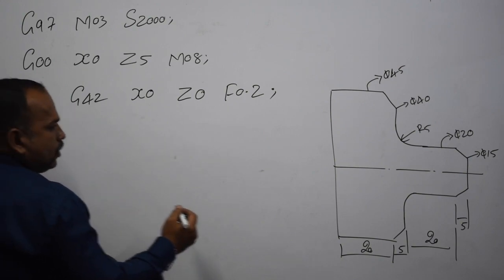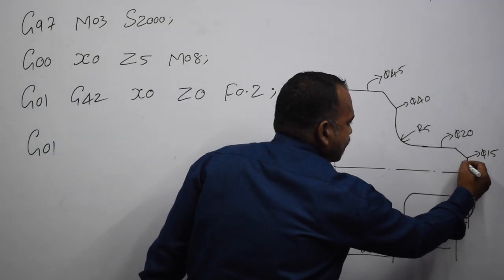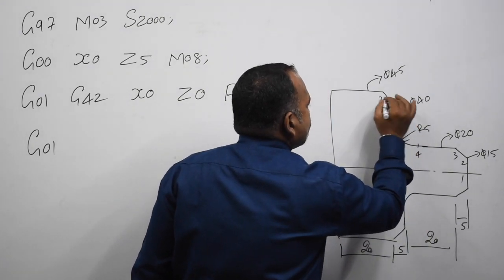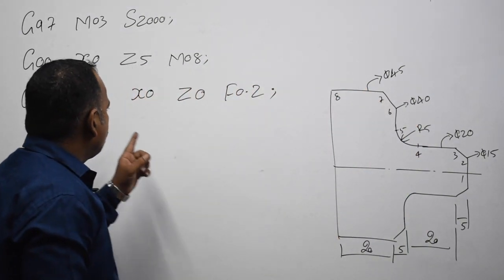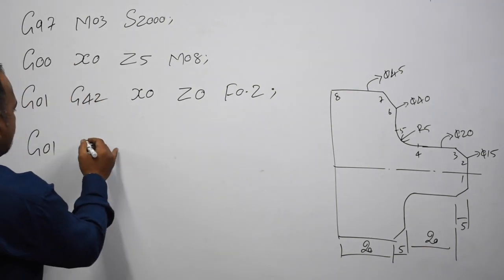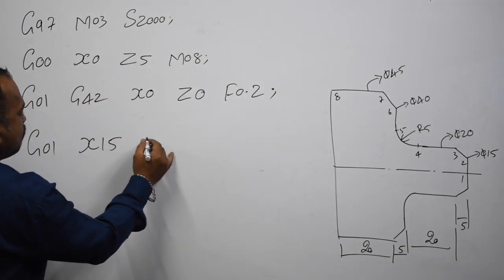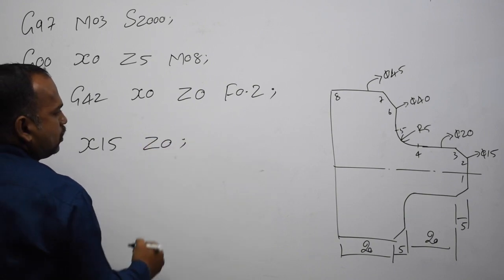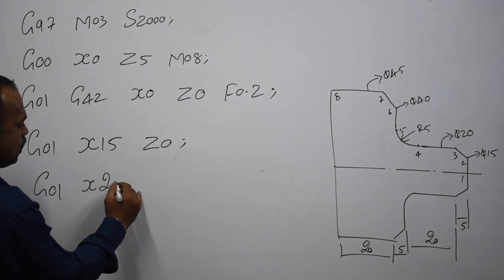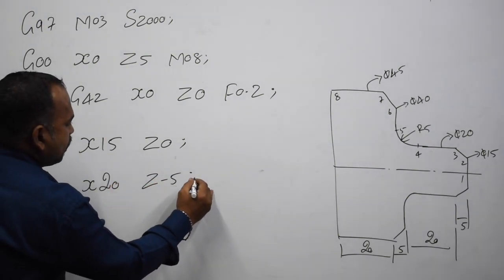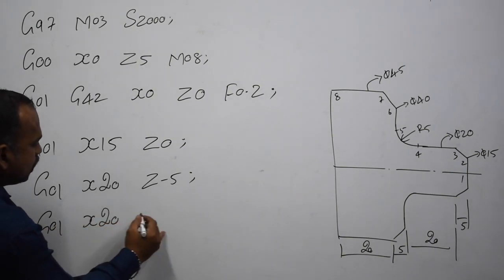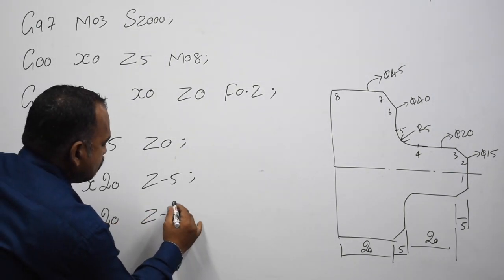This is the first point through eighth point. First point: X0, Z0. Second point: X15, Z0. Third point: G01, X20, Z-5. Fourth point: G01, X20, Z-20. Fifth point: G02, X30, Z-25, R5 — radius 5, circle interpolation clockwise. Sixth point: G01, X40, Z-25. Seventh point: G01, X45, Z-30. Eighth point: G01, X45, Z-50.